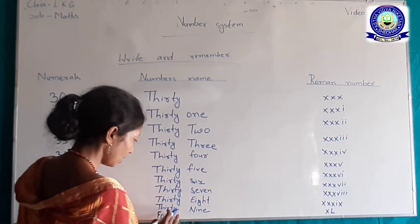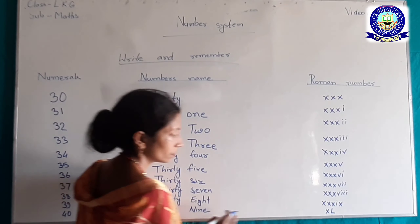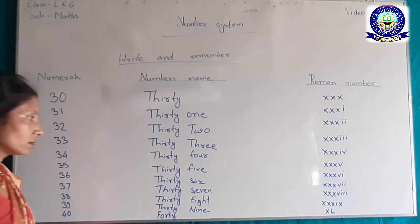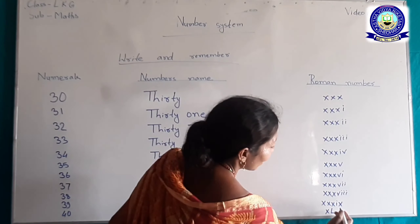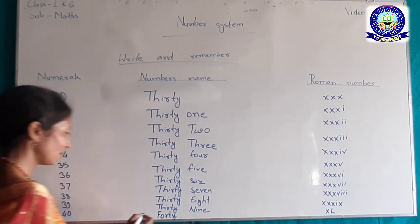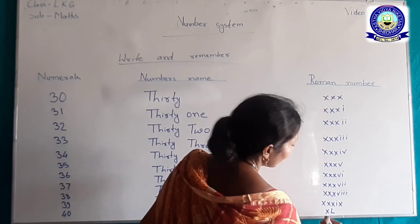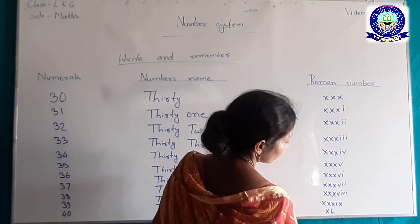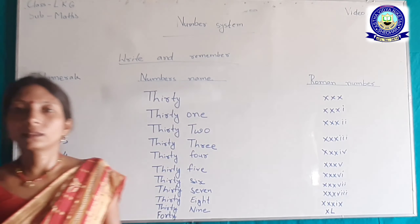39 — T-H-I-R-T-Y, 30, EIGHTY — 39 का Roman number XXXIX। 40 — F-O-R-T-Y, Roman number X-L (XL)। Thank you.